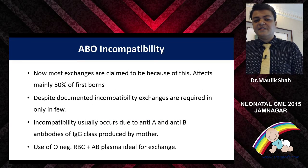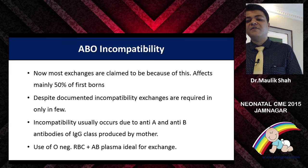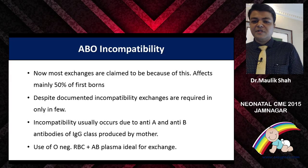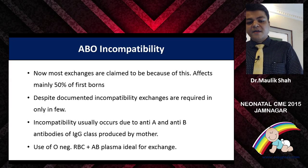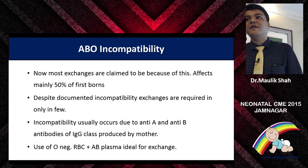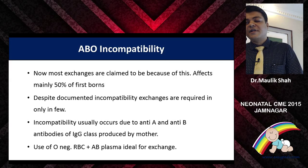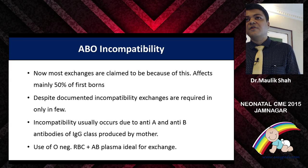ABO incompatibility has emerged simply because RH isoimmunization is going down. Most babies who require phototherapy or exchange transfusion now fall into this category. For exchange transfusion in ABO incompatibility, if possible and if your blood bank allows, use O-negative RBCs dipped in AB plasma — this is available, better, and gives good results. We already have a study going on in our institute and this works out well.